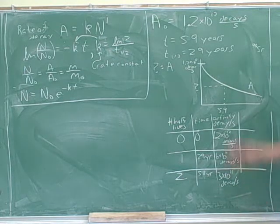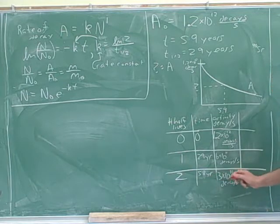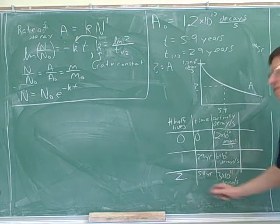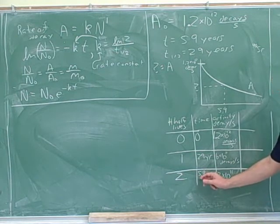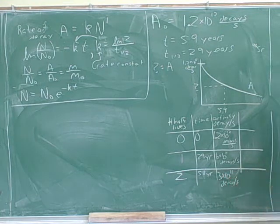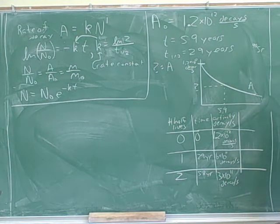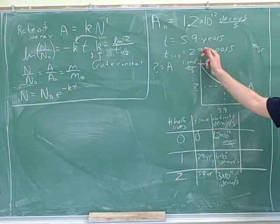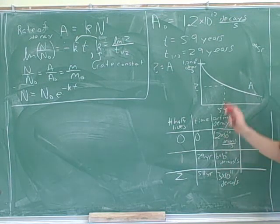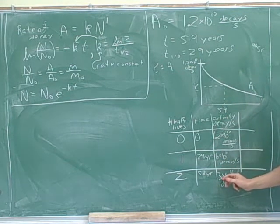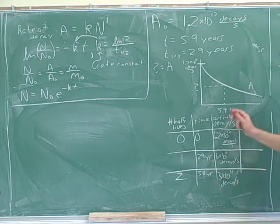This is the best we can do with the table. There's not much point doing another row because the next row would be 58 plus 29, which is far more than 59. Tables only give you the exact answer if the time period is a multiple of the half-life. Since 59 years is not an exact multiple of the half-life of 29 years, the table can only give us an approximate answer, but it's still a good start to get a feel for how this works.